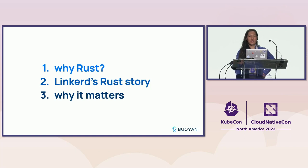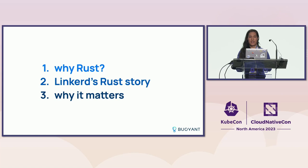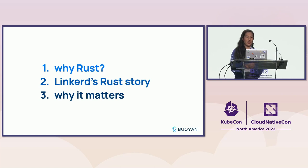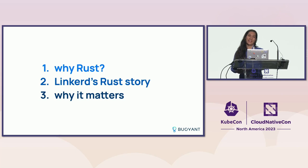What I want to talk about today is give some background on how the last five years have gone for the Linkerd project with respect to adopting Rust. We decided about five years ago to adopt Rust as the language to write the Linkerd proxy in, and that was a very controversial and big decision at the time. I want to talk about why we did that, how it went, what the outcomes were, and why that matters to people who are not Linkerd maintainers and what it means for the ecosystem in general.